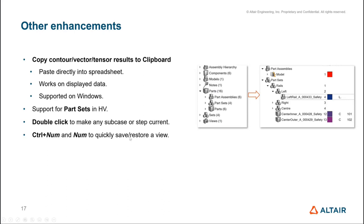We have also introduced shortcuts to quickly save and restore views on screen. Use Control + Num Key 0-9 to save any view, and the Num Key alone to quickly restore it. A user-defined view is created in the browser. Additionally, HyperView Player now supports space mouse — a frequently requested feature from designers.